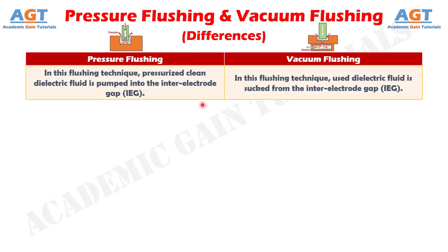Difference number 1: in pressure flushing technique, pressurized clean dielectric fluid is pumped into the inter-electrode gap, whereas in vacuum flushing technique, used dielectric fluid is sucked from the inter-electrode gap.